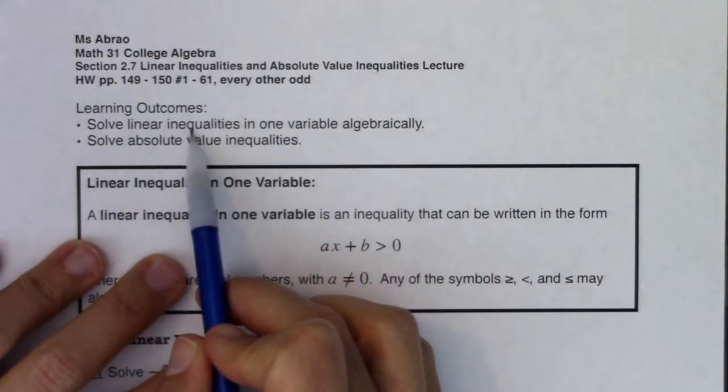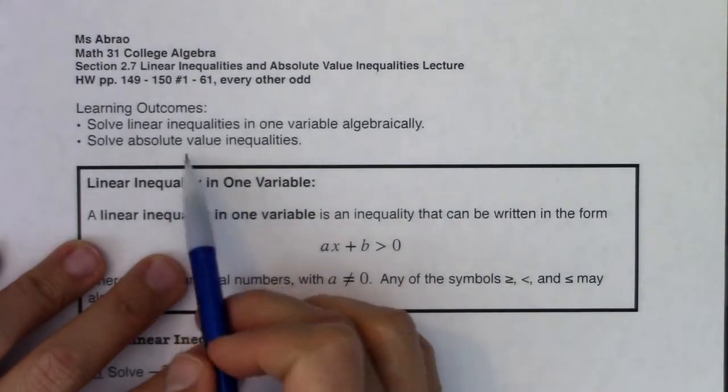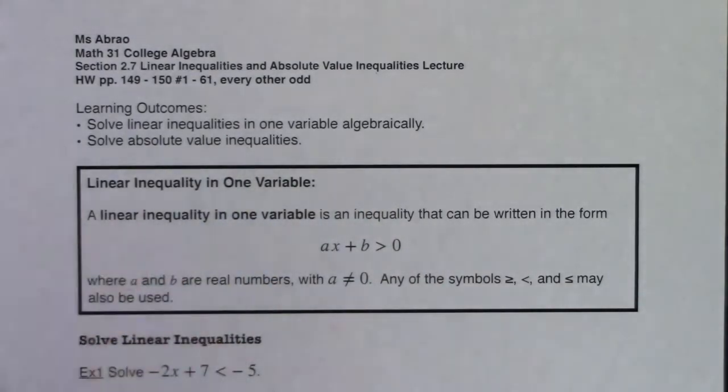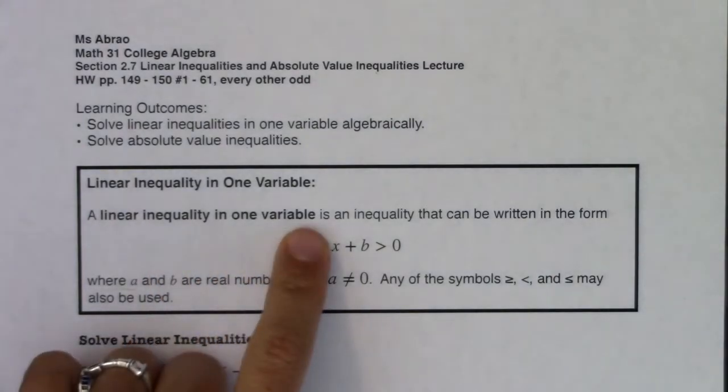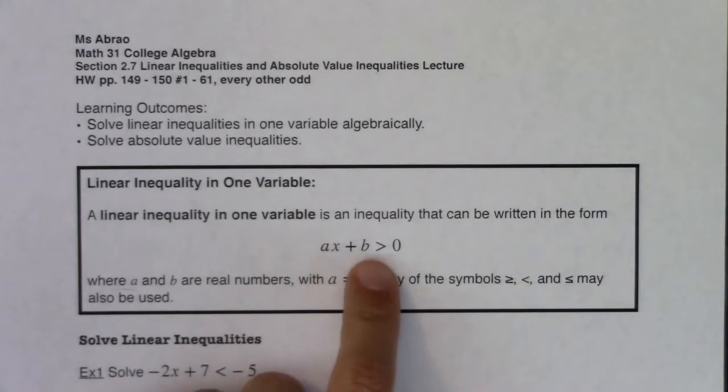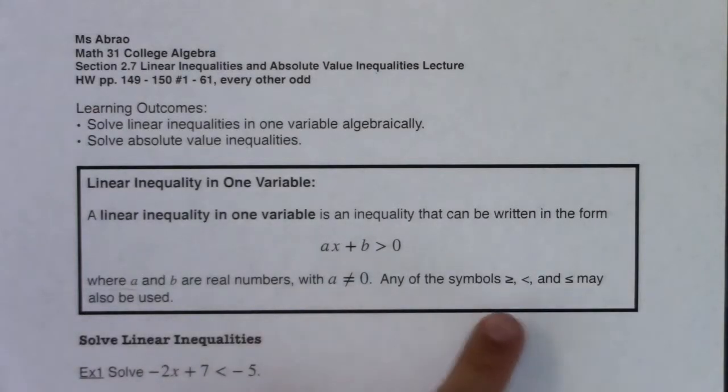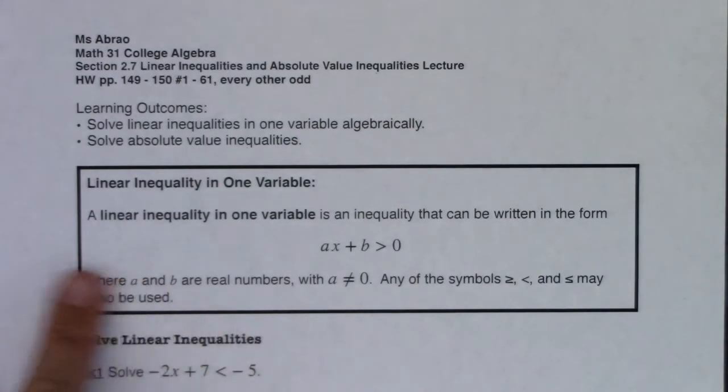So we're going to solve linear inequalities and then absolute value inequalities. If you hear me say linear inequality, a linear inequality in one variable is an inequality that can be written in the form ax + b > 0, where a and b are real numbers, a isn't equal to zero, and any of the symbols greater than or equal to, less than, and less than or equal to may also be used. For this box I just happened to pick the greater than symbol, but you could pick any of these other three.